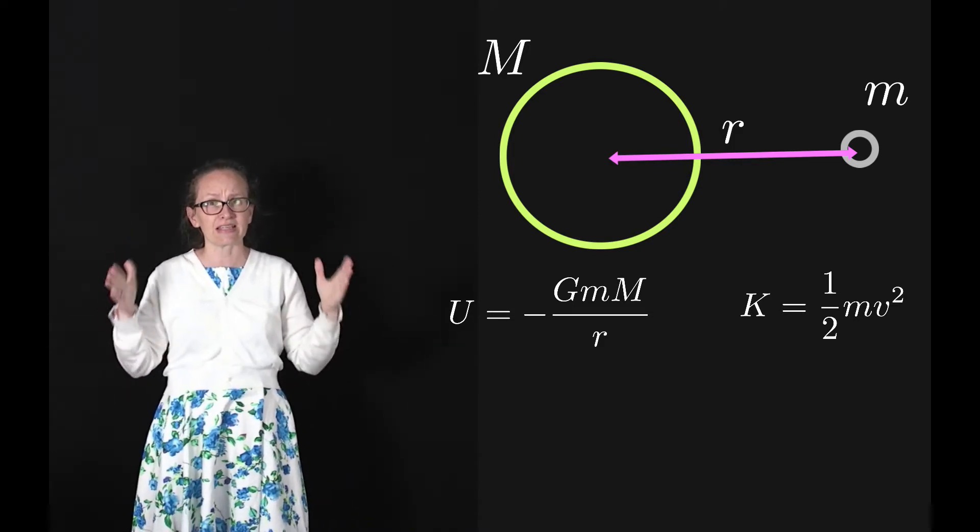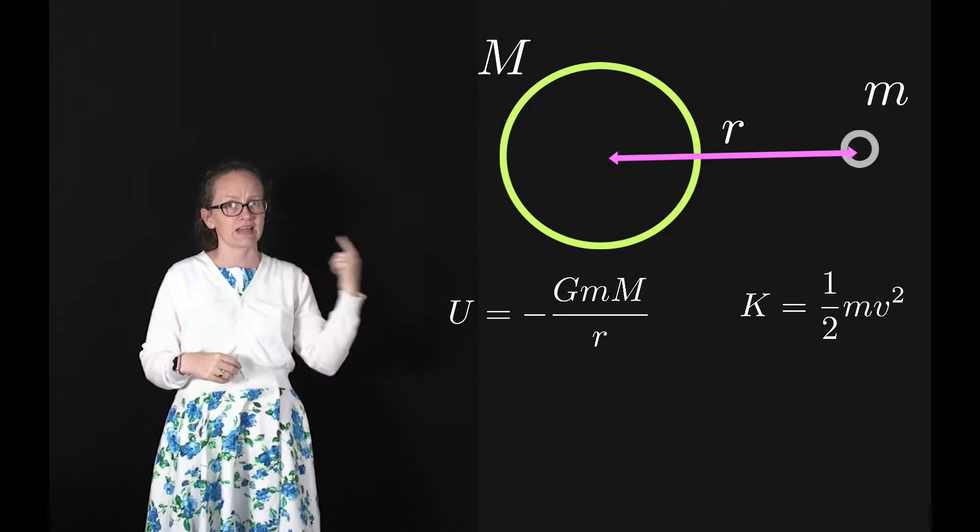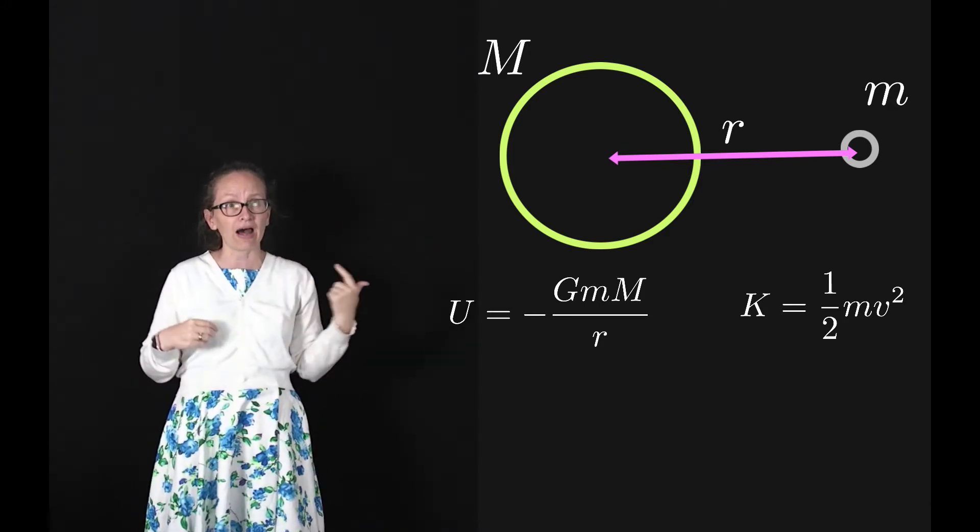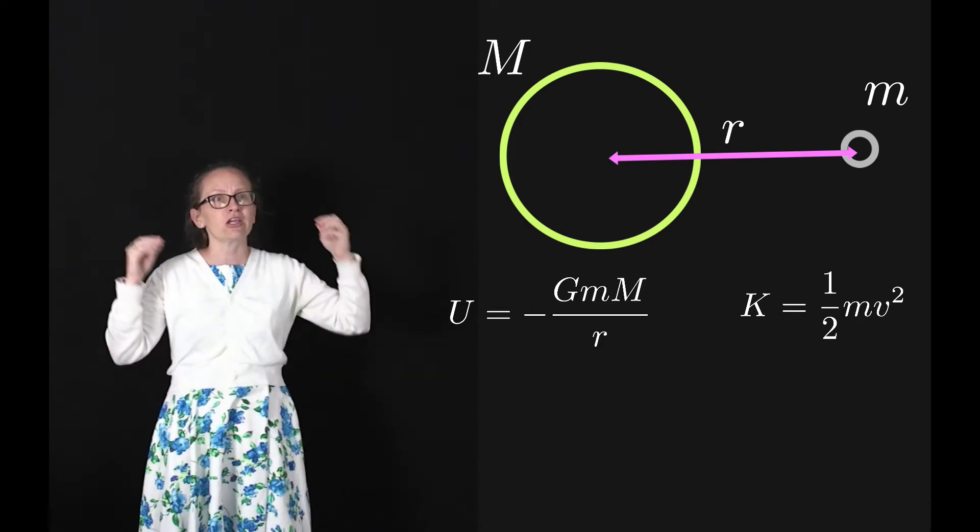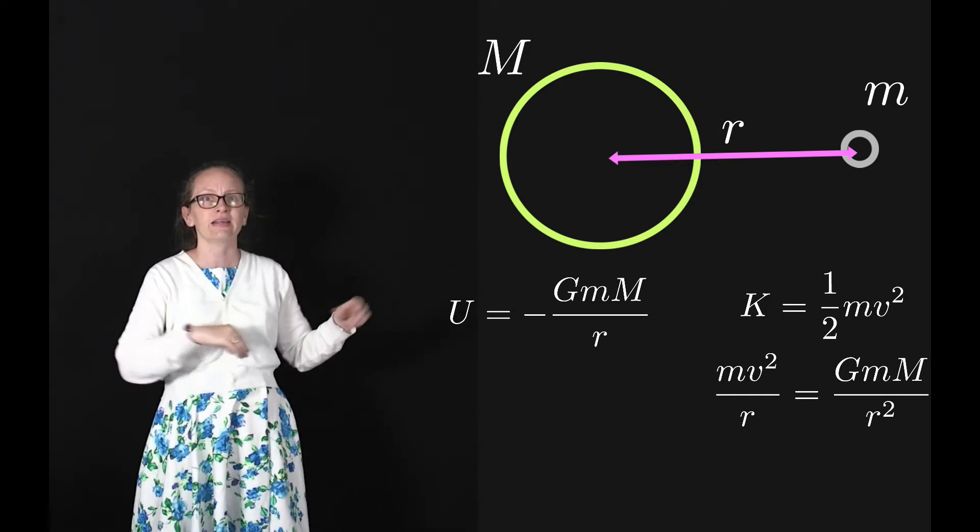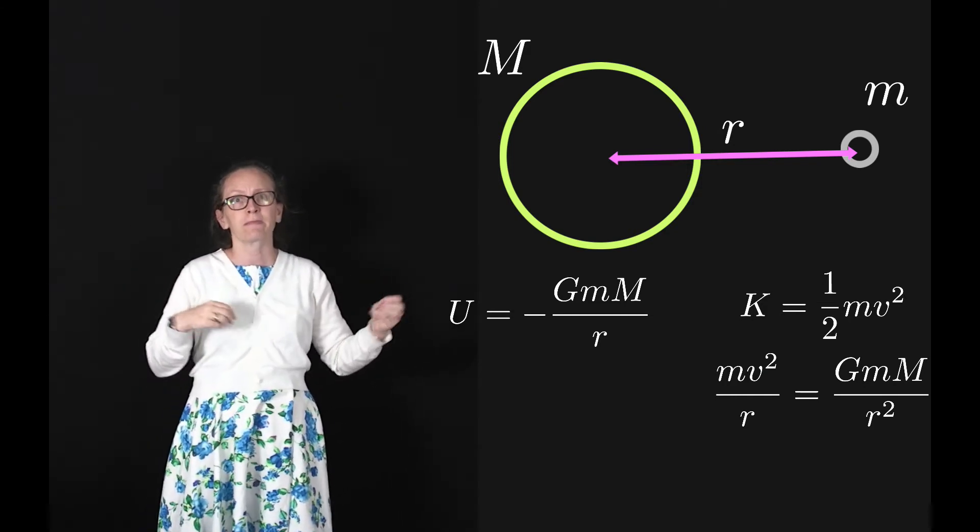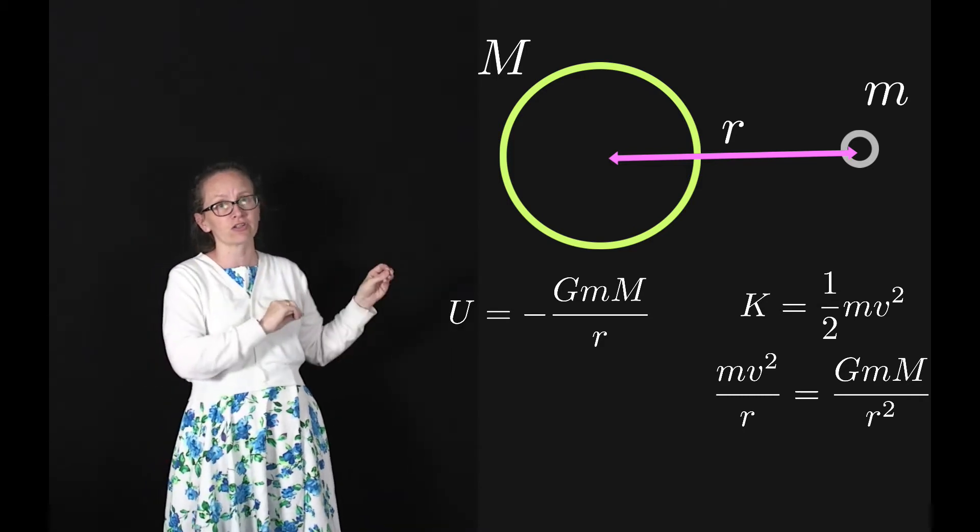To come up with a nice expression for this, remember that this satellite is following a circular path, so it's undergoing uniform circular motion. The only force actually acting upon that satellite is the gravitational force, so the centripetal acceleration is all caused by that gravitational force.